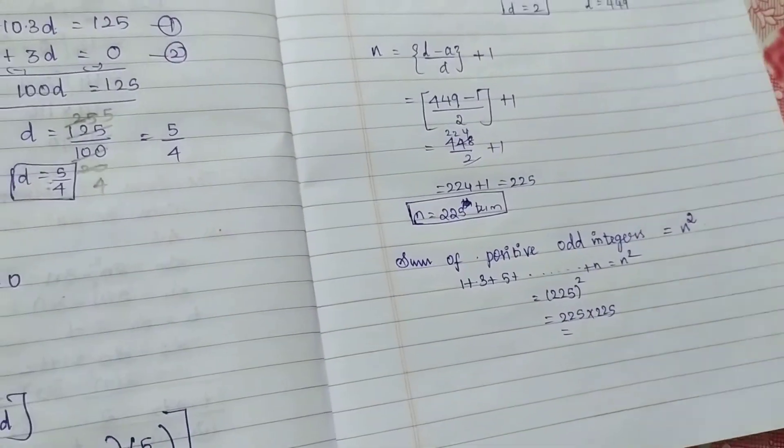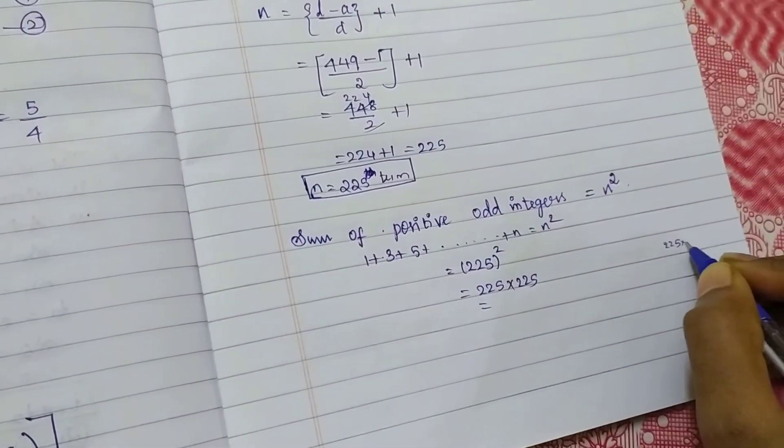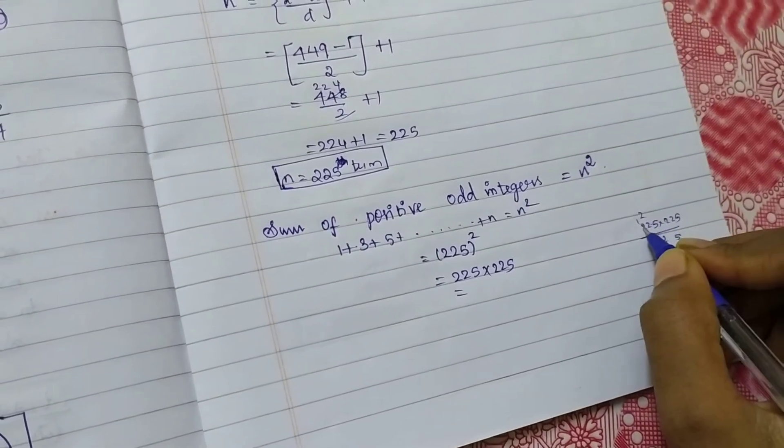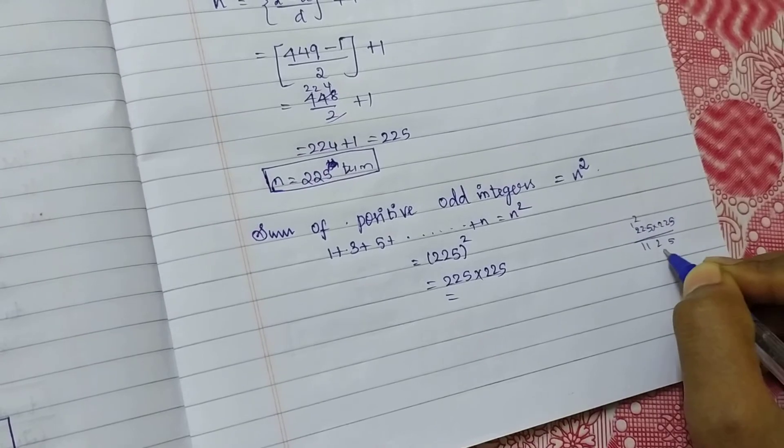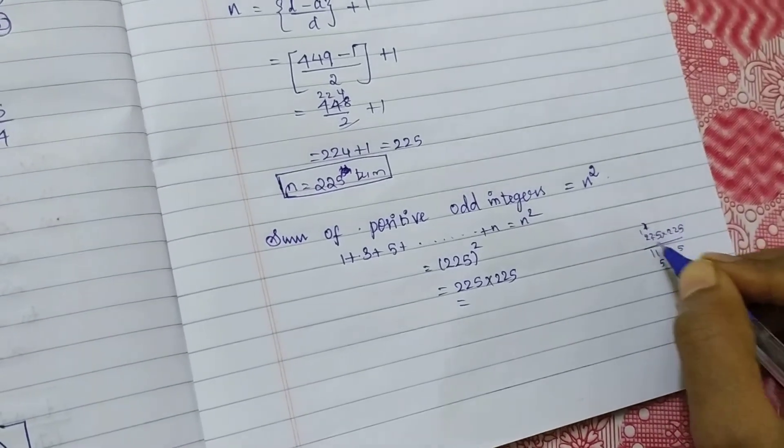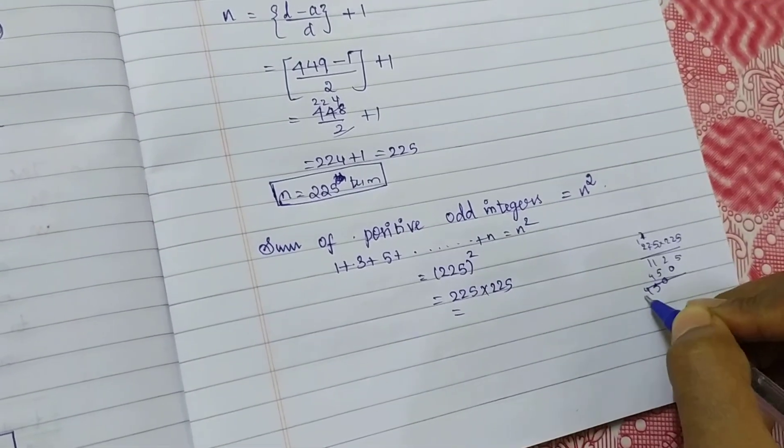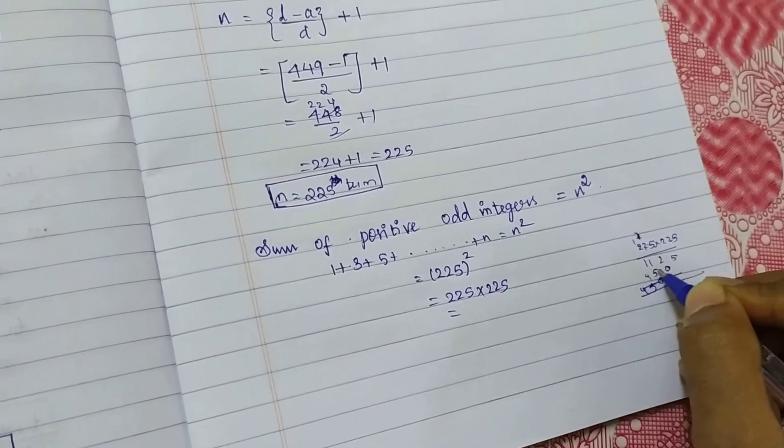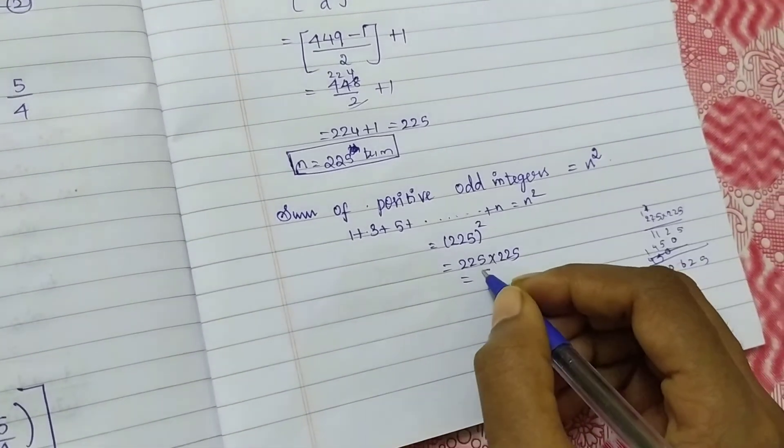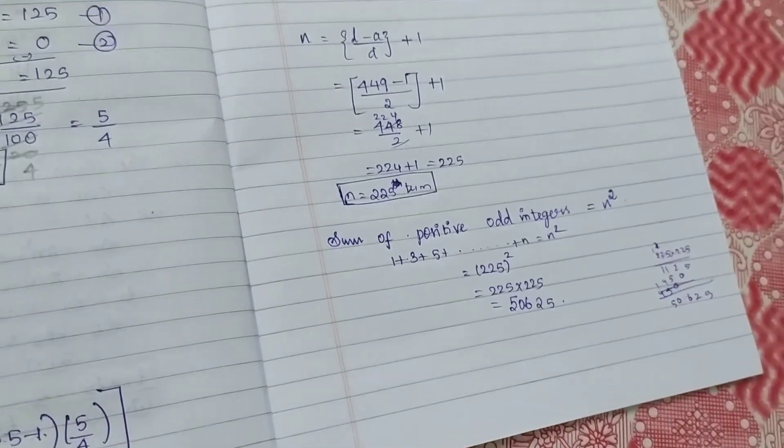225 into 225. 5 times 5 is 25, 2 carry 10, 12, balance 1, 10, 11. 2 times 2 is 4, balance 1, 4, 5, 4. Again, 2, right? So 5, 2, 6, 0, 1, 5. So what's my answer? 50625 is my answer.